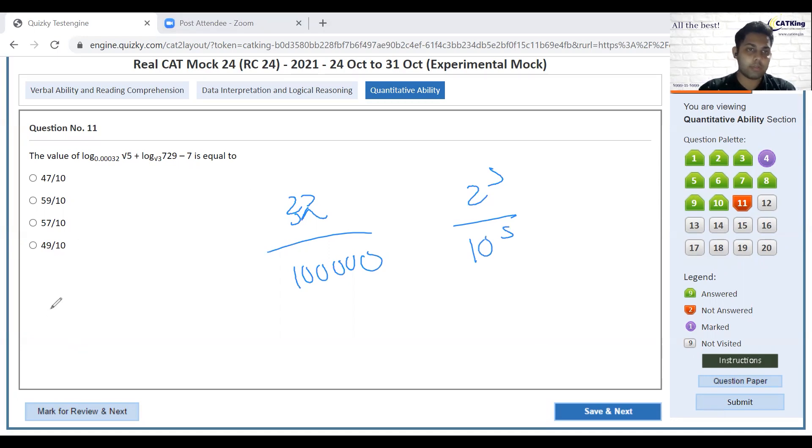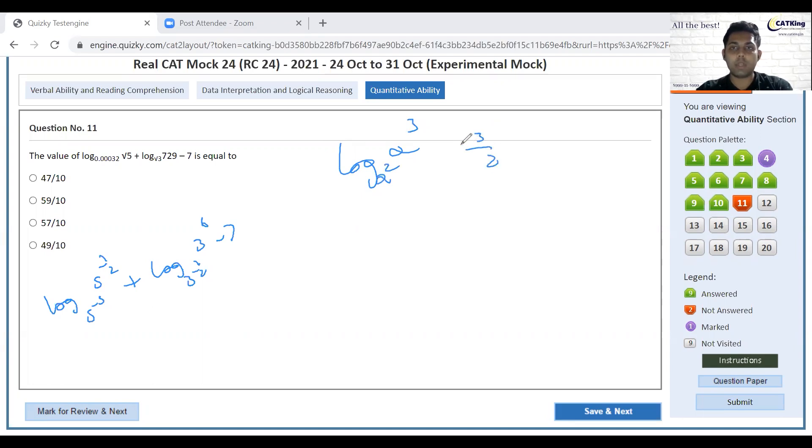Basically 5 to the power minus 5 so it will become log 5 to the power minus 5, 5 to the power half plus log 3 to the power half upon 3 to the power 6 minus 7. Log concept same base same log concept is what log a cube a square 3 by 2. So over here it'll become half into minus 5 plus 6 divided by half. 12 minus 7 is 5 minus 1 by 10, 49 by 10. Simple.